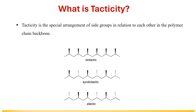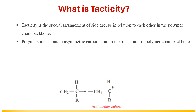Tacticity is simply how the side groups are arranged in relation to each other in the polymer chain backbone. It mainly describes the stereochemical irregularity of the side groups in the polymer chain. The main requirement for a polymer to show tacticity is that the polymer must contain an asymmetric carbon atom in the polymer chain backbone.